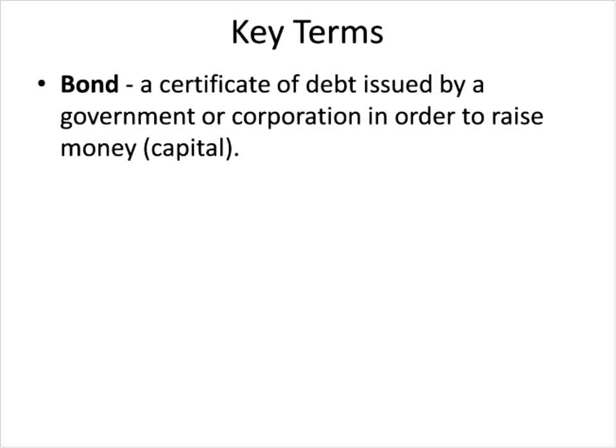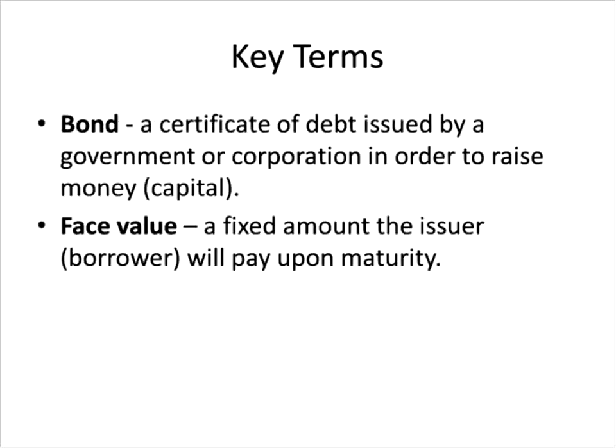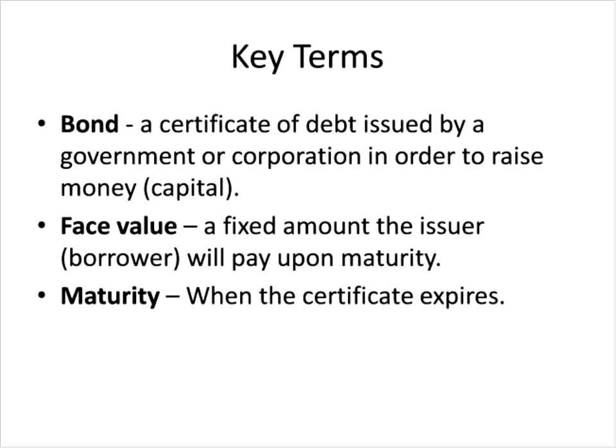The bondholder has the promise that the corporation will pay him or her a fixed amount in the future. This fixed amount is called the face value. The bondholder knows exactly the number of dollars he will receive when the bond reaches the end of its life, or maturity. Maturity is also written on the bond contract, so the bondholder knows exactly how many months or years until he receives the face value payment.